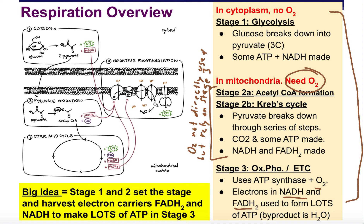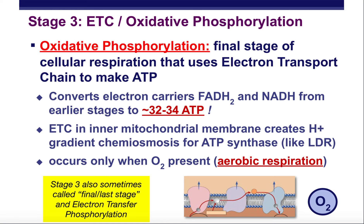Stage 3 needs oxygen because oxygen is actually a key reactant in that stage. This stage is known as oxidative phosphorylation — sometimes called ETC, oxidative phosphorylation — to reflect that there's an electron transport chain and oxidative phosphorylation occurring. Oxidative phosphorylation is a specific term for the creation of ATP in this final stage; it's the setup of the electron transport chain to make ATP using ATP synthase and oxygen.